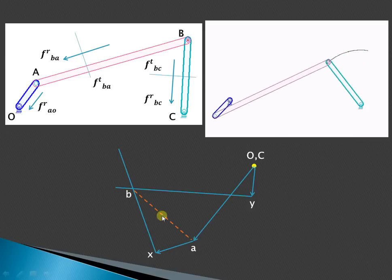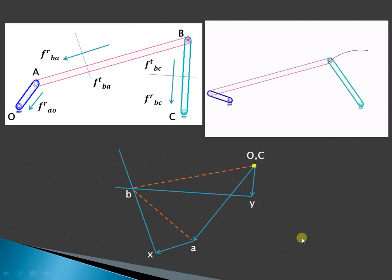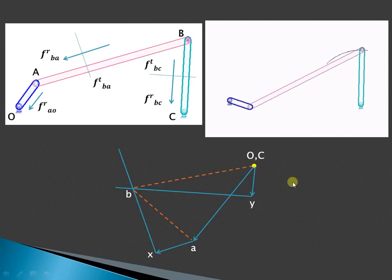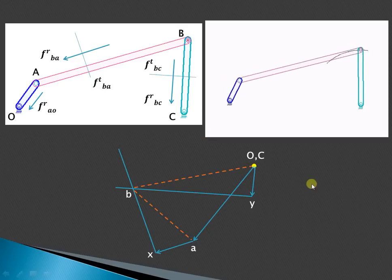Join AB representing the resultant acceleration of link AB. Similarly, join BC representing the resultant acceleration for link BC.